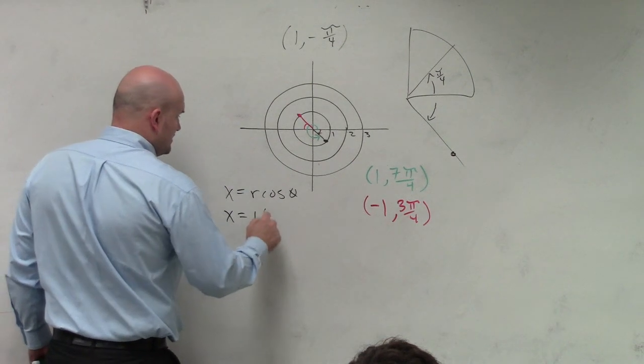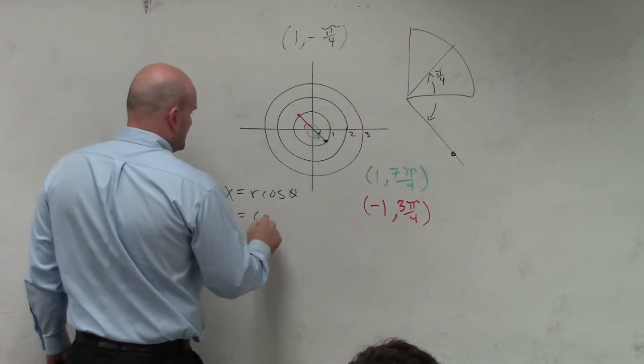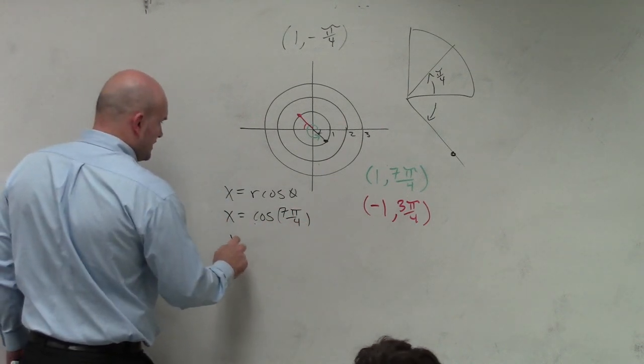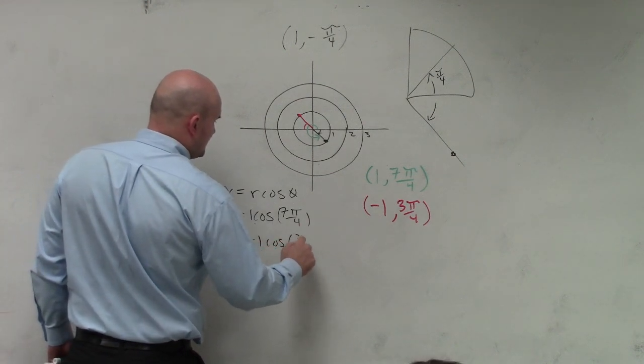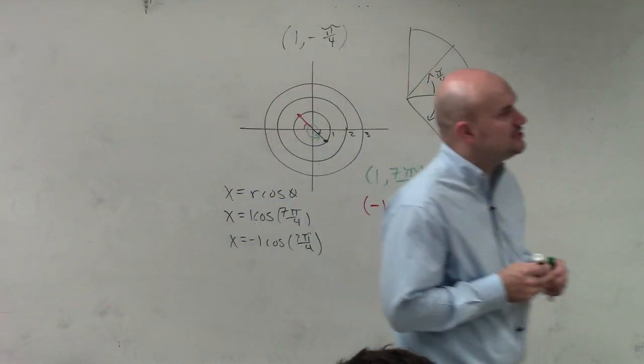x equals 1 cosine of 7 pi over 4, and also x equals negative 1 times cosine of 3 pi over 4. Do those in your calculator and make sure that you did them correctly.